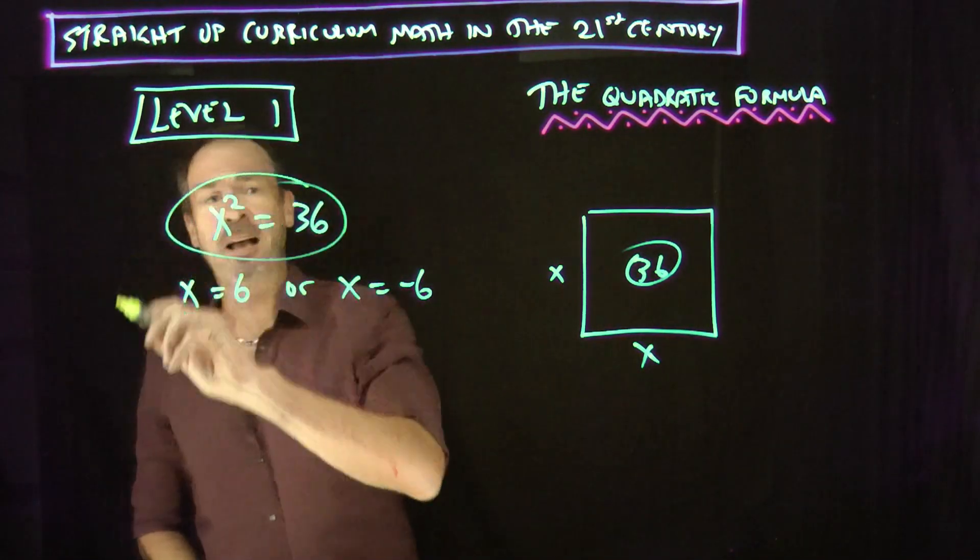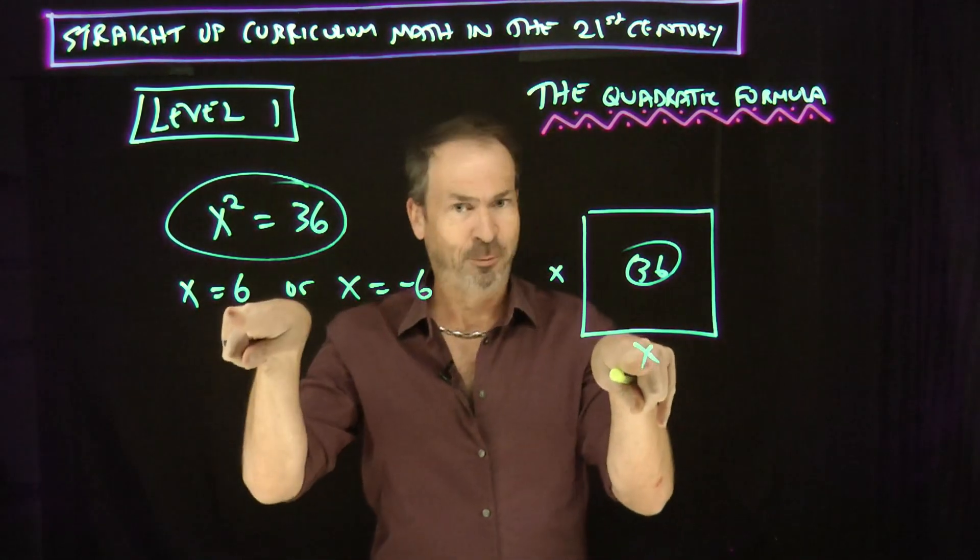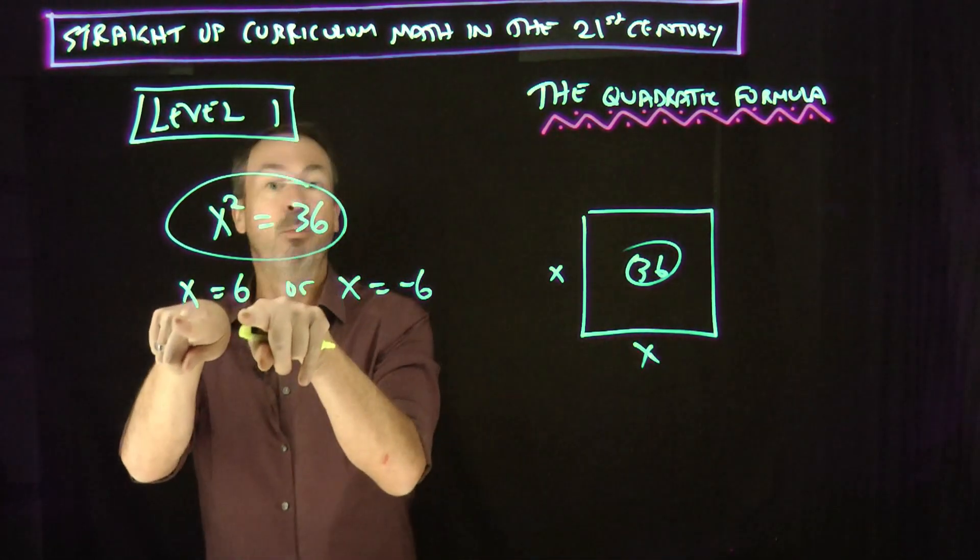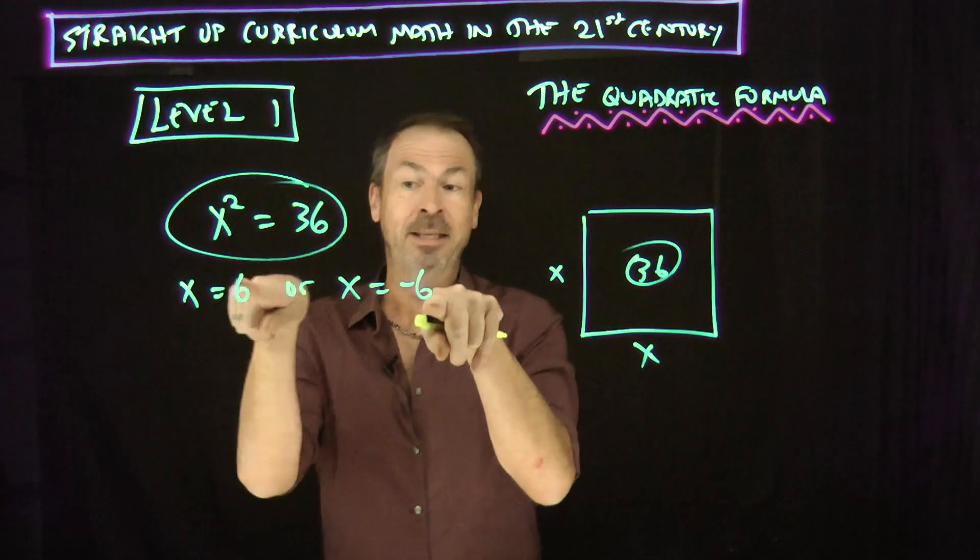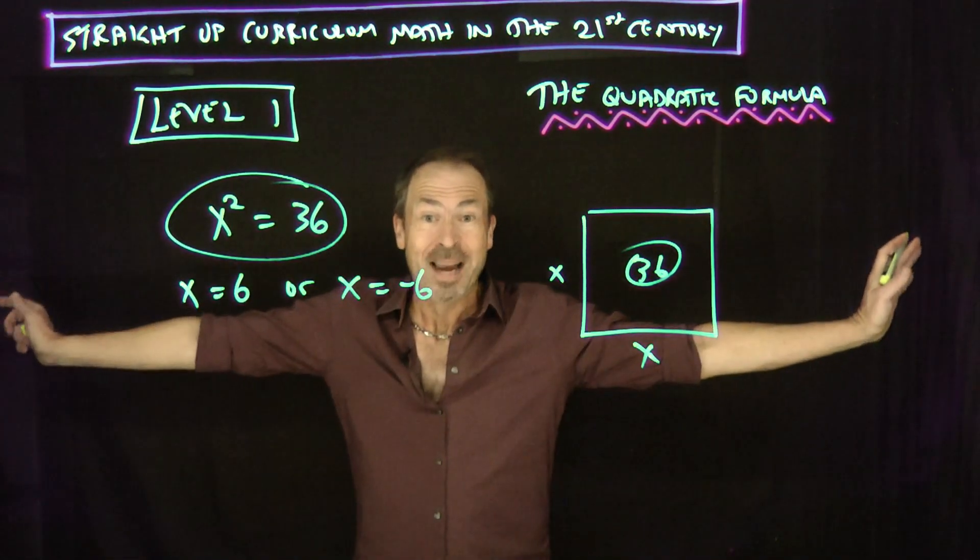So we've done it. There's our very first quadratic equation, and we see it actually has one solution with regard to geometry, but in general, with regard to arithmetic, you'd be a little bit more open and say it has two solutions: 6 or negative 6. That's level 1. Piece of cake.